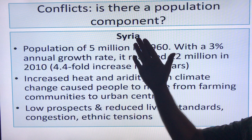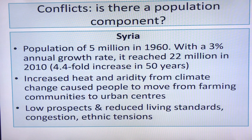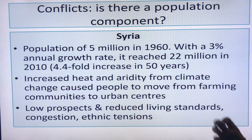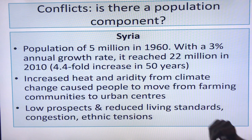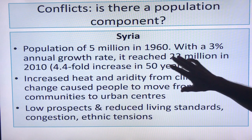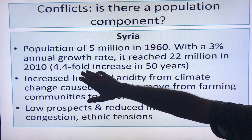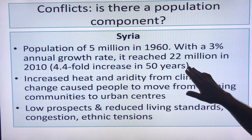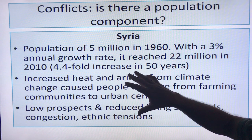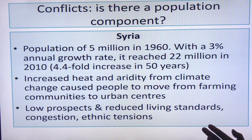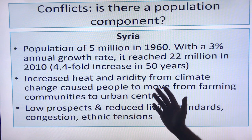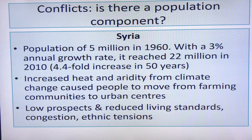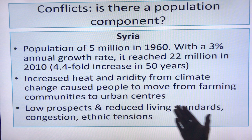Conflicts around the world — is there a population component? Well, most conflicts are a fight over resources, whether it be oil, water, food — or repression. There are lots of reasons, but too many people on the planet heats up the pot, stirs the pot. Look at Syria: a population of 5 million in 1960 with a 3% annual growth rate, reaching 22 million in 2010 — a 4.4-fold increase in 50 years. They had a massive drought from 2006 to 2010. It wiped out the livelihoods of farmers in rural areas. 1.5 million people who couldn't farm anymore moved to urban centers, with uncomfortable heat, record heat waves, record dryness, low prospects, few jobs, reduced living standards, congestion, and ethnic tensions — and the rest is history.